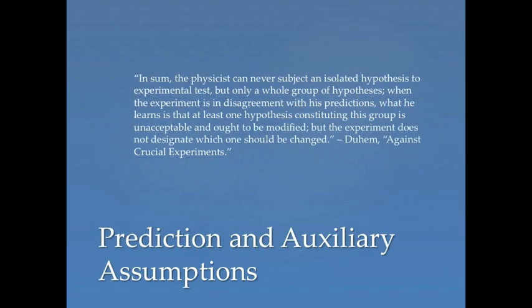So this leads Duhem to say, "In sum, the physicist can never subject an isolated hypothesis to experimental test, but only a whole group of hypotheses. When the experiment is in disagreement with his predictions, what he learns is that at least one hypothesis constituting this group is unacceptable and ought to be modified. But the experiment does not designate which one should be changed."